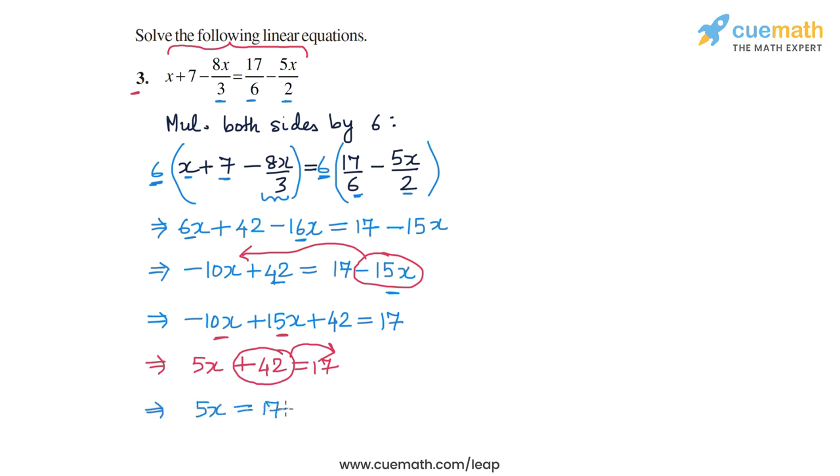This will give us 5x is equal to 17 minus 42, and 17 minus 42 is minus 25. So we will get 5x is equal to minus 25.